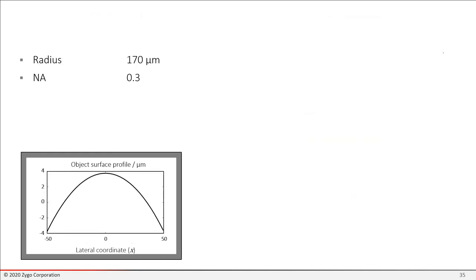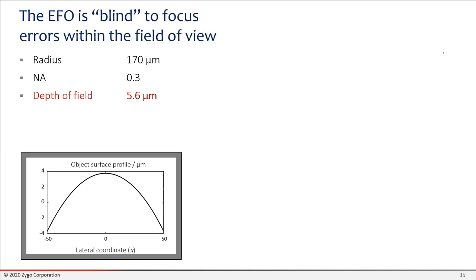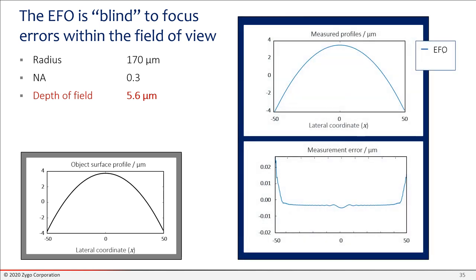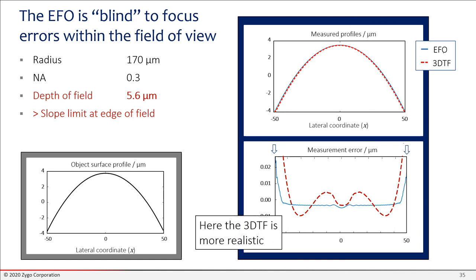Let's try something a little bit more challenging. Here we have a part with a lot of surface departure, plus or minus 4 microns, which compared to the depth of field is pretty large. And we're going to expect to see some difficulties here because the model, the EFO model is blind to focus errors within the field of view. The previous example, we were putting the object at different focus positions overall, defocusing the instrument. But this is a case where the departure itself is introducing defocus. If you go ahead and run the EFO model, you see pretty good results. Measurement error is close to zero, except at the very edges where the light is actually falling outside the acceptance cone of the numerical aperture. But if you run the 3D model, the 3D transfer function model, you see variations on the order of 10 nanometers almost. These are caused by focus effects. And we expect that in this case, the 3DTF approach is going to be more realistic than the EFO.